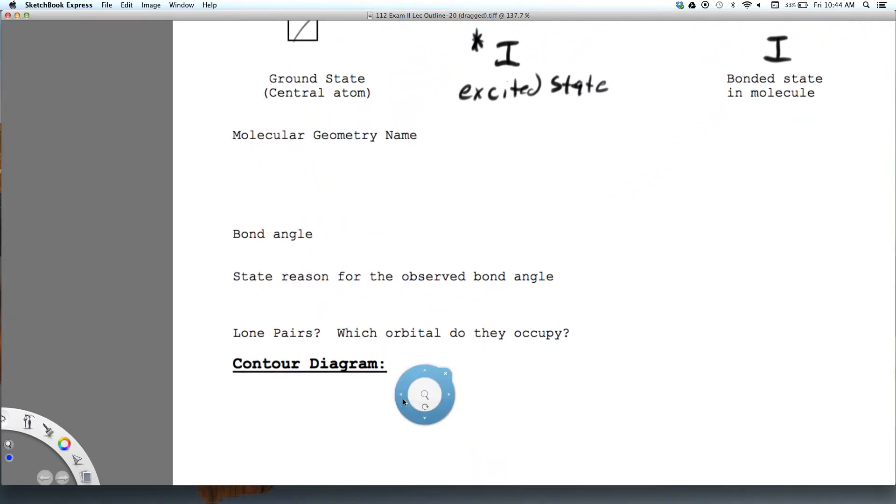So the geometry name is T-shaped and the bond angles are less than 90 degrees. And the reason for these bond angles being less than 90 degrees...